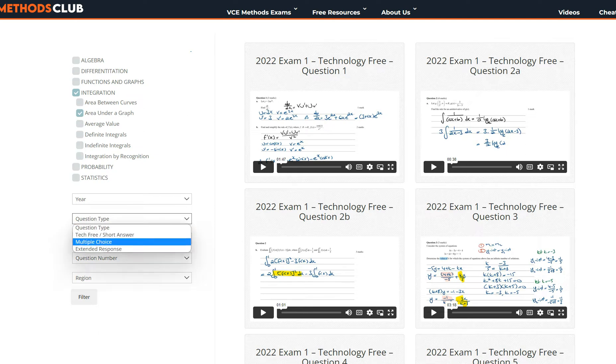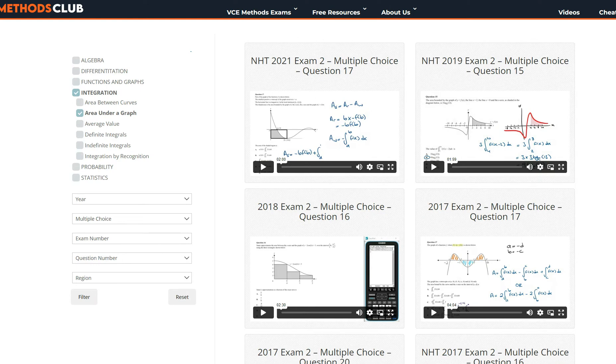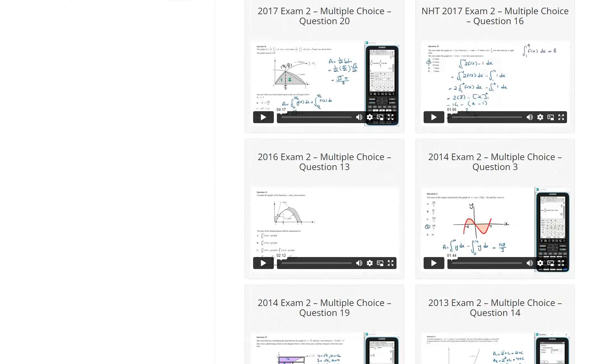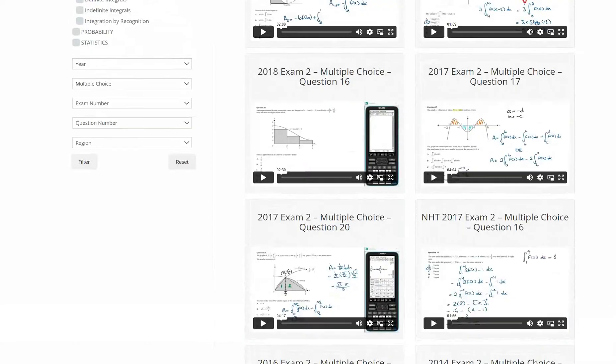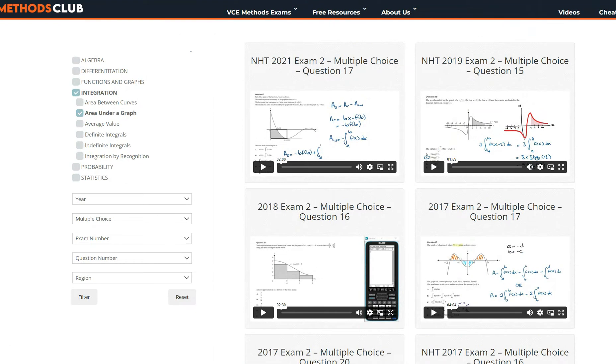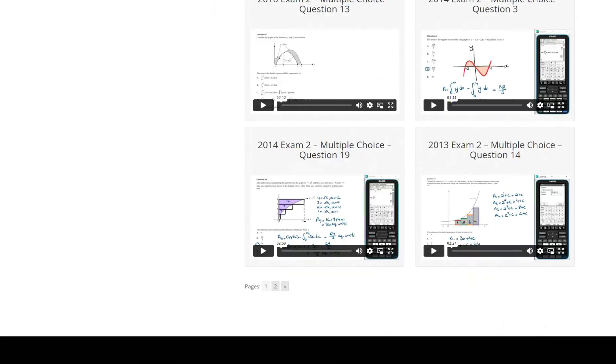Go to question type, select multiple choice, and then click on filter. This is then going to instantly group all the past mathematics exam questions related to finding the area under a graph in the multiple choice section of the exams. There's quite a few questions there. Try these questions out to strengthen and test your understanding on this topic. And if you get stuck, you can watch the video solutions. Good luck, and I'll see you guys in the next video.